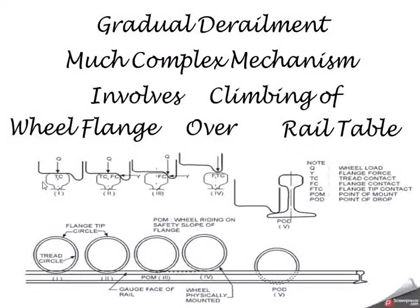This picture shows the various stages of climbing of wheel flange over rail table starting from tread contact, flange contact, flange tip contact, point of mount and point of drop.